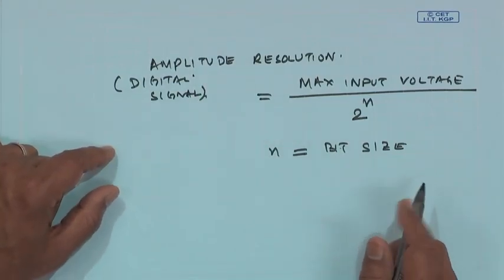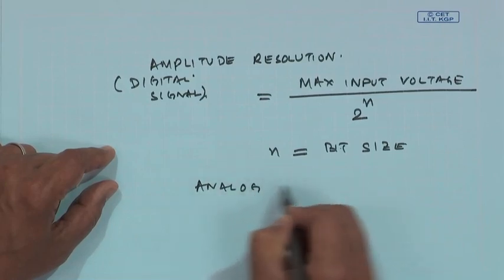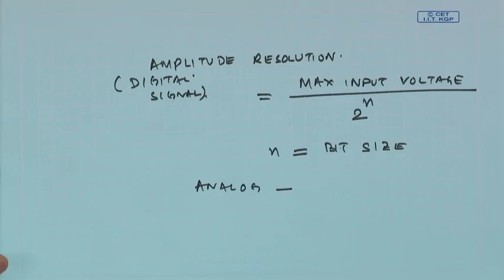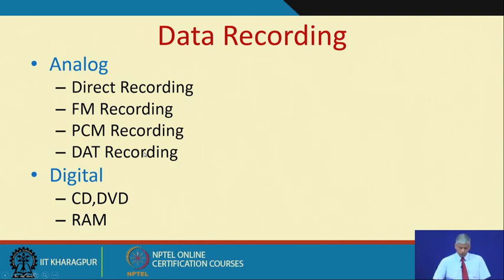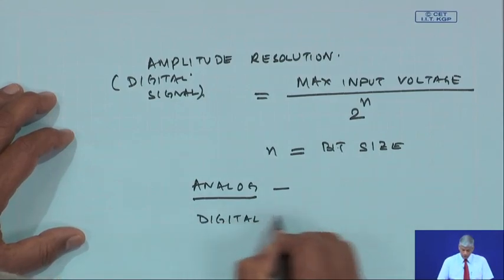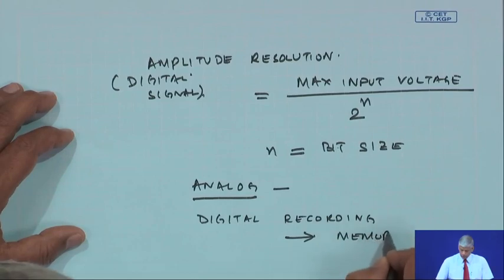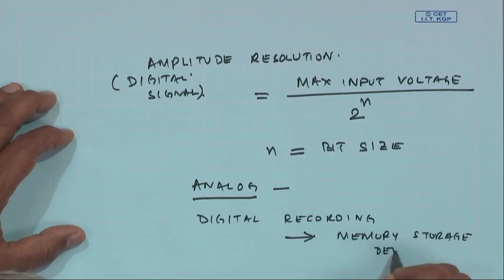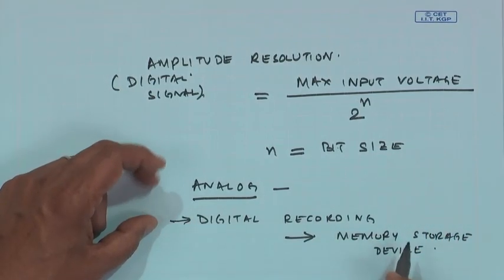A signal coming out of a transducer is actually analog, so I can do some analog recording. The different modes of analog recording are: direct recording, frequency modulation recording, pulse code recording, and DAT recording. Today, with digital technology, we can also do digital recording — even data recorded on a pen drive or flash drive is digital recording.